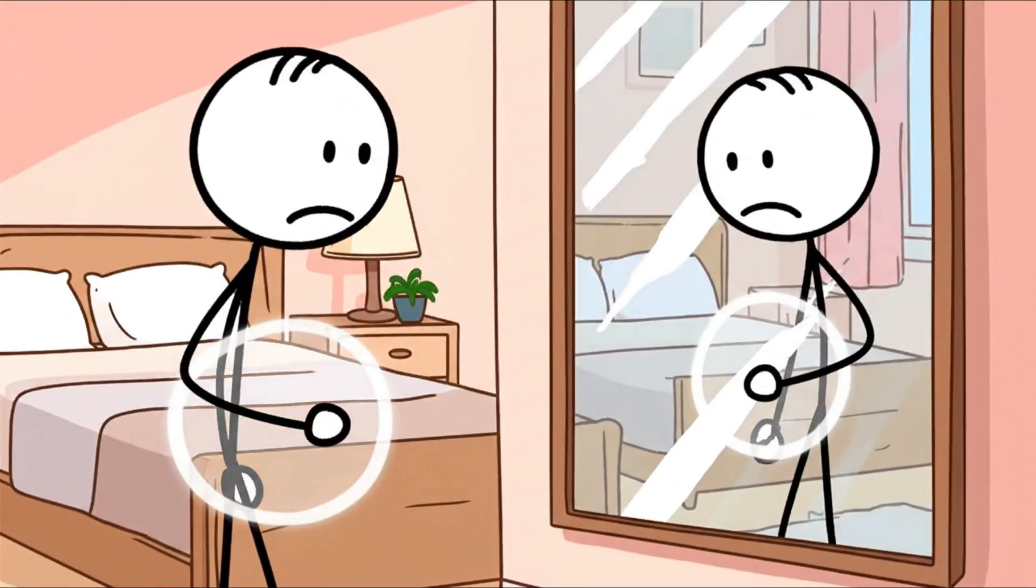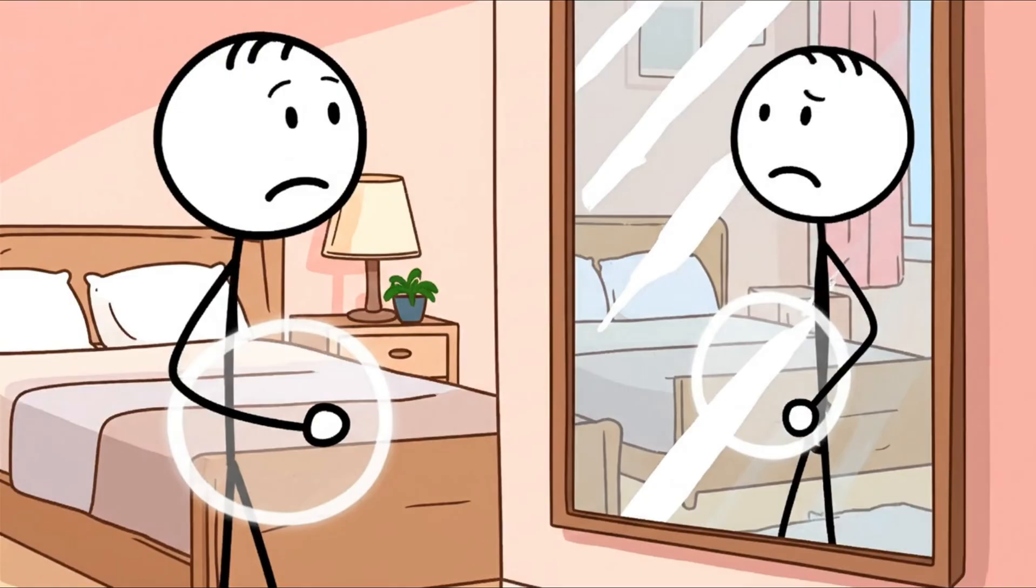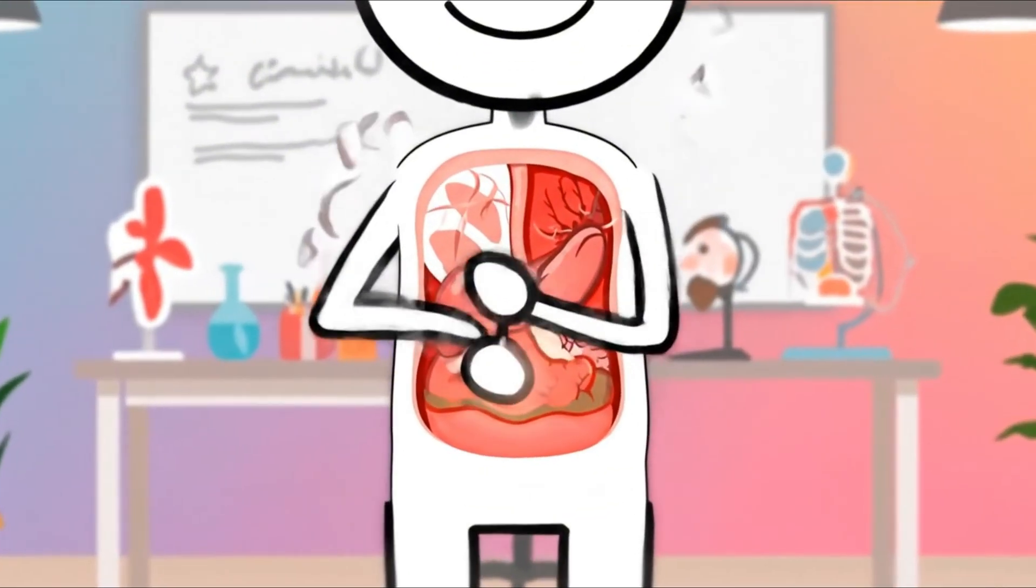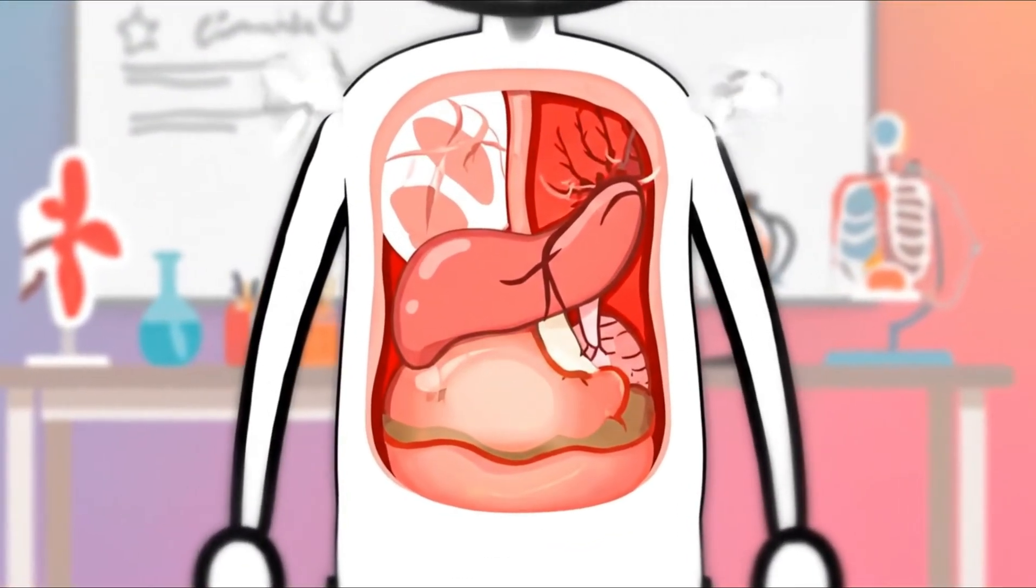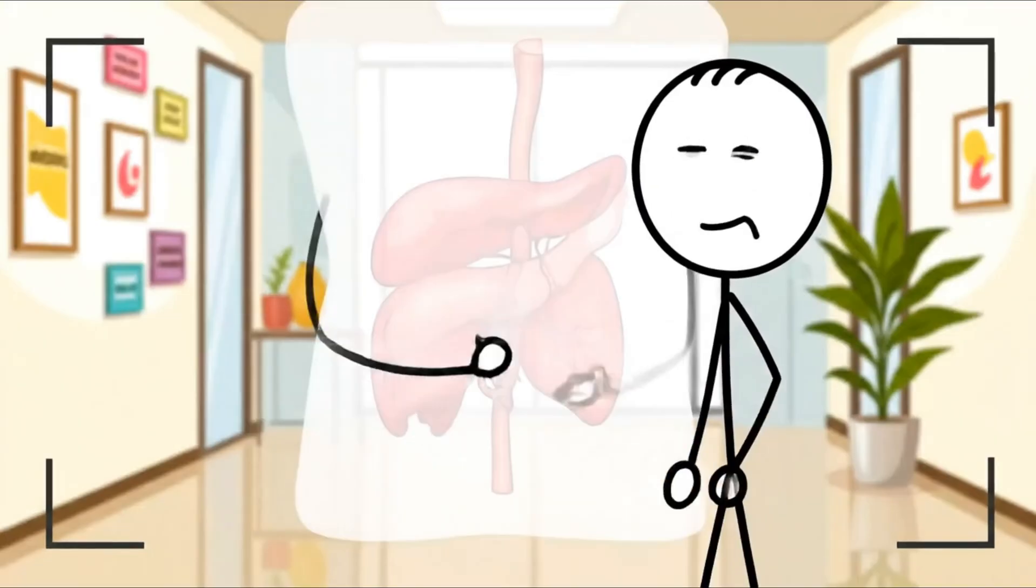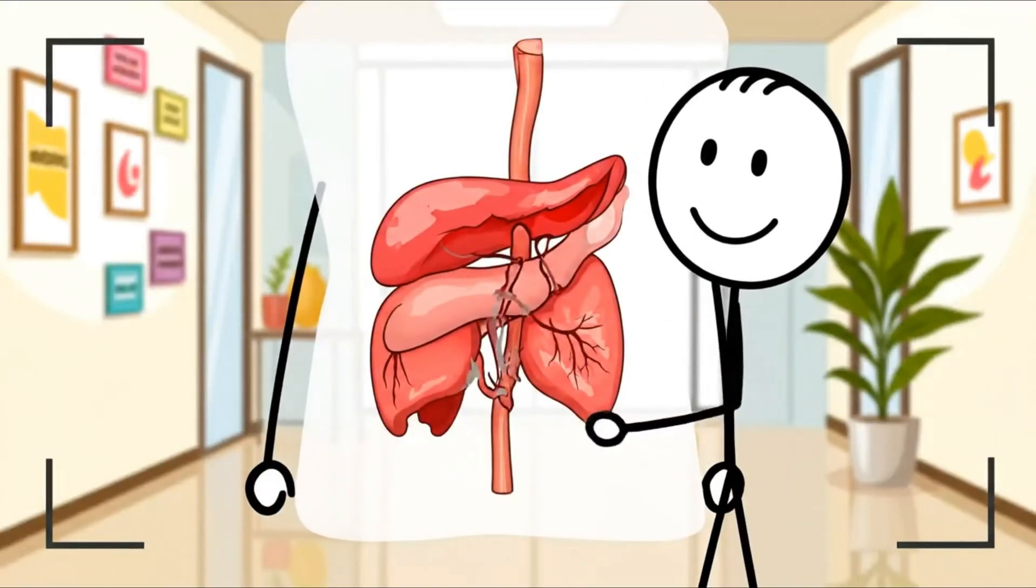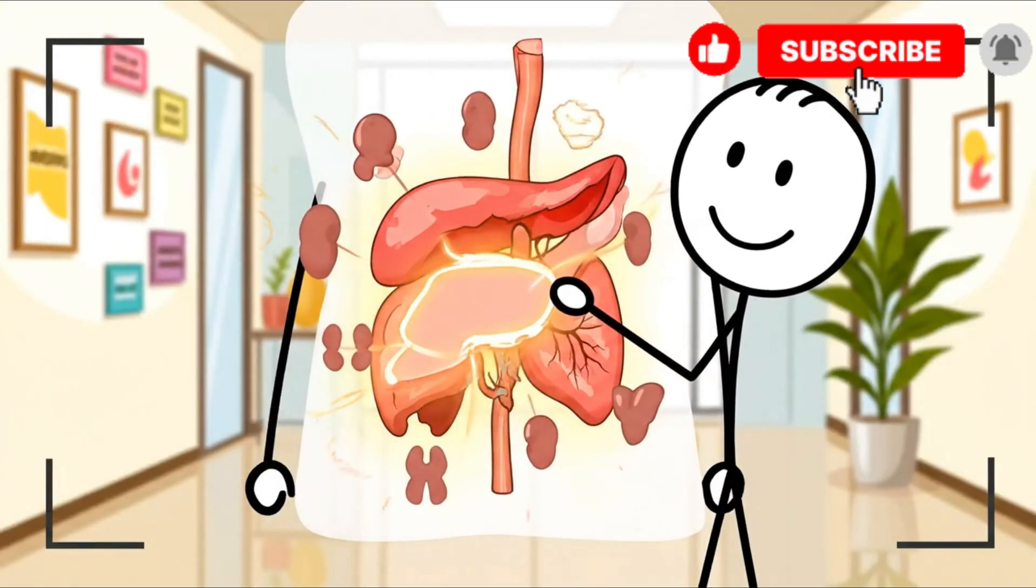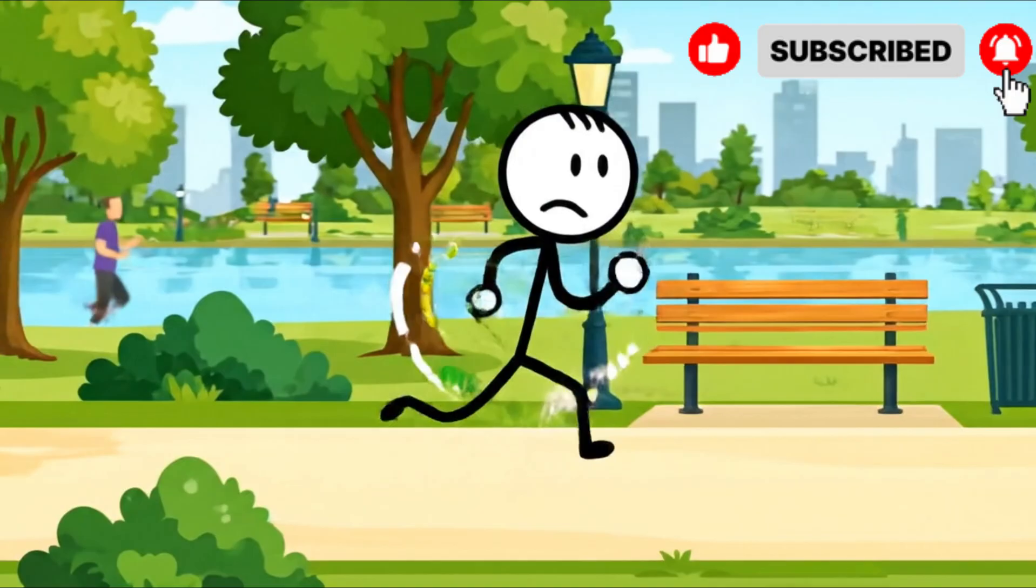Instead, there's a sense of ease, as if your body has found a sustainable rhythm. That's because, biologically, it has. Mitochondria respond to this steady demand by increasing their use of fatty acids, and hormonal signals become more favorable for releasing stored energy. This is the metabolic switch most people never realize they're waiting for.